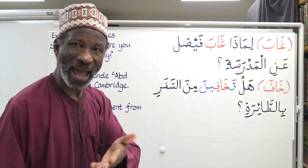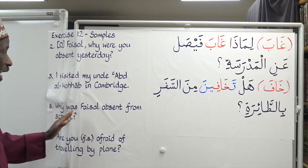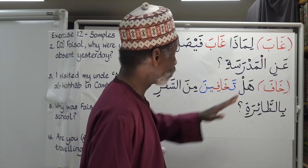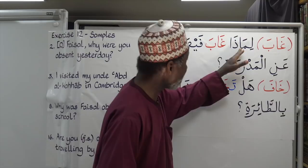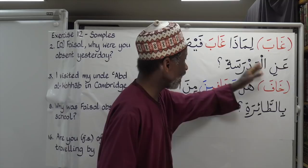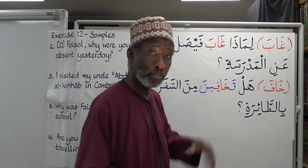Let's do number eight of the same exercise: 'Why was Faisal absent from school?' We're going to use the same verb ghab, meaning 'to be absent.' Limadha ghab Faisal anil madrasa — 'Why was Faisal absent from the school?' We use the same ghab, which means 'he was absent.'